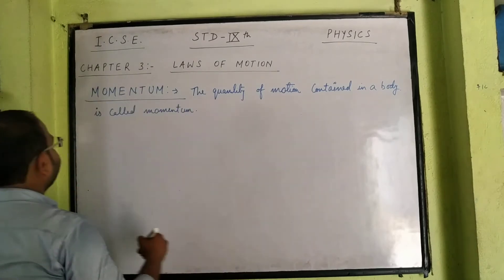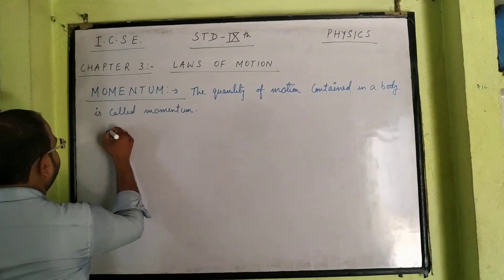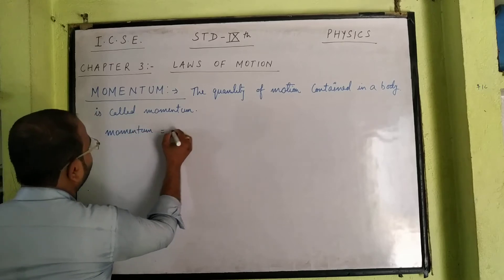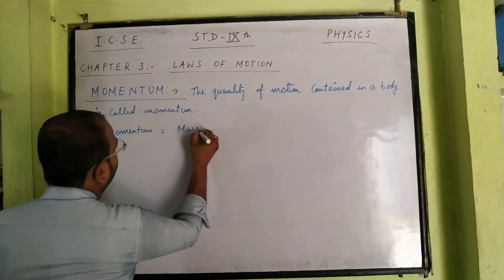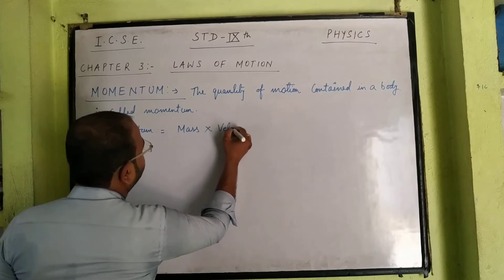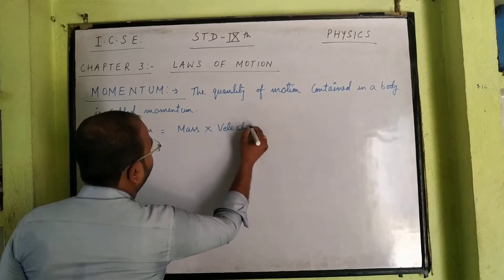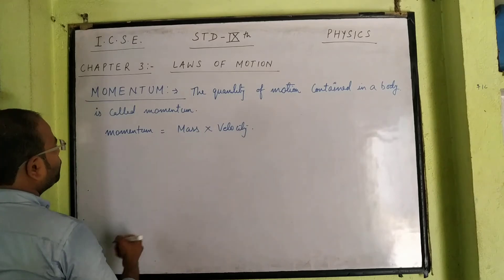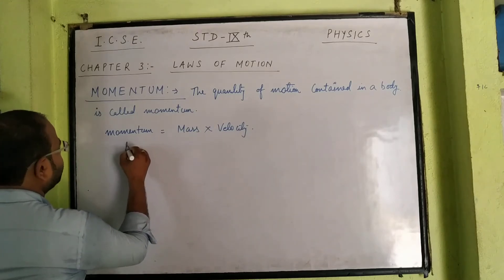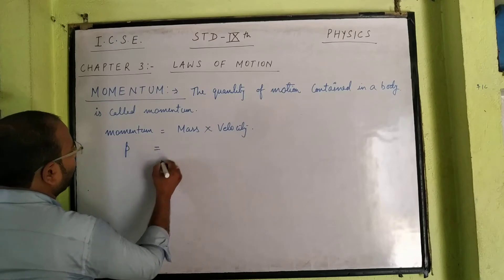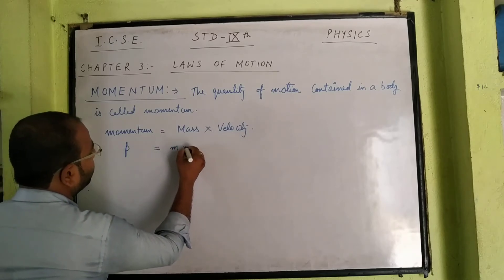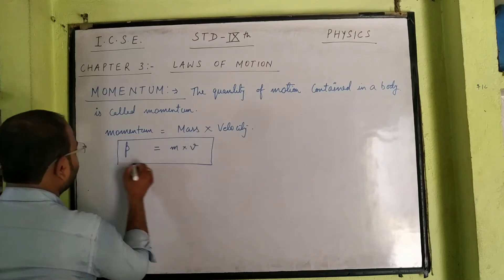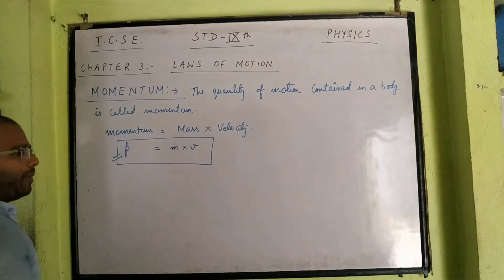That is why momentum can be determined by multiplying the mass and velocity of an object. So momentum is equal to mass into velocity. If we write this formula in short, momentum is written as p, mass as m, and velocity as v. So p = mv is the formula for momentum.